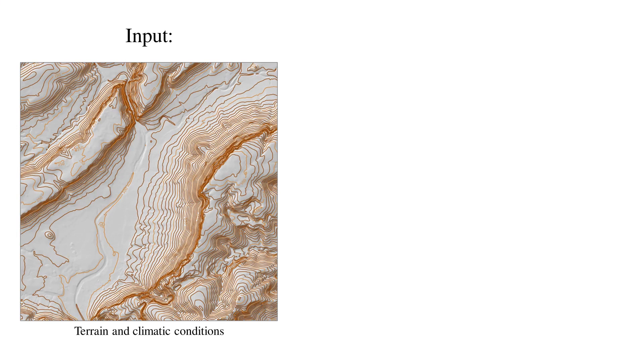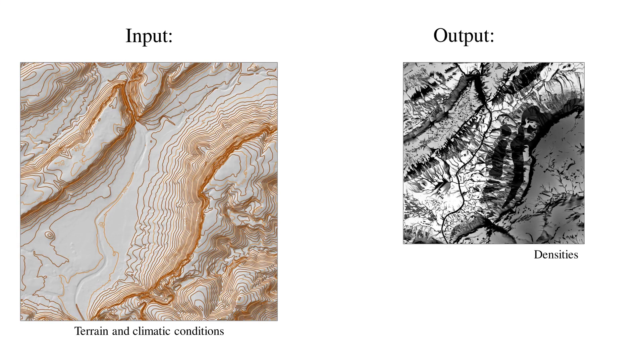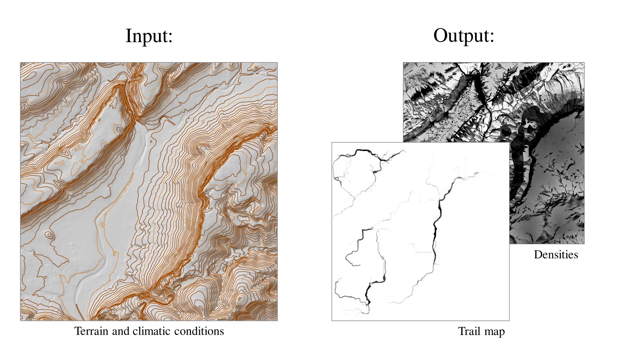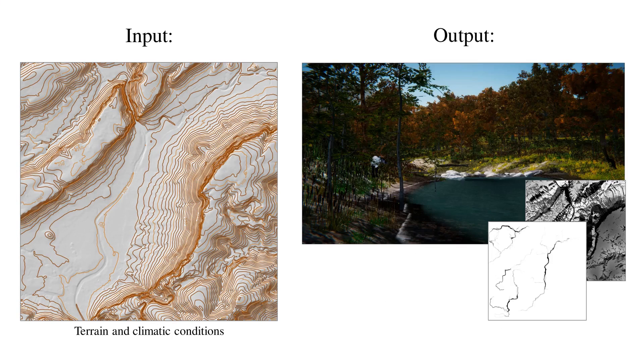Our algorithm takes as input a terrain and its climatic conditions, and it outputs a set of density maps for each species, as well as a trail map. This is then used to instantiate the ecosystem during on-the-fly exploration.